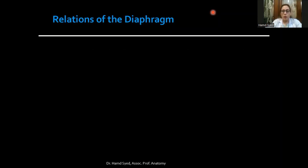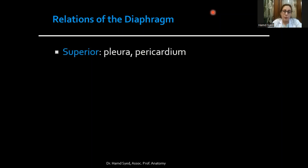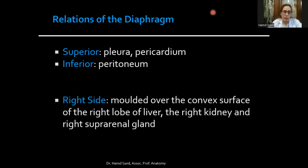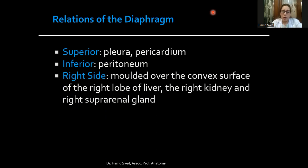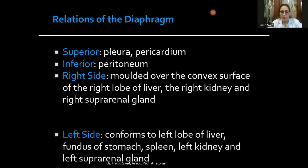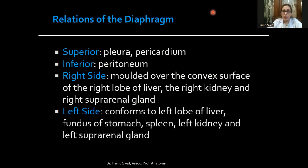The relations of the diaphragm: superior to it are the pleura and pericardium; below it is the peritoneum. On the right side, the large right dome is molded over the convex surface of the right lobe of the liver, right kidney, and right suprarenal gland. On the left side, the left dome conforms to the left lobe of the liver, fundus of the stomach, spleen, left kidney, and left suprarenal gland.